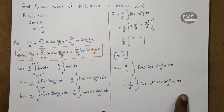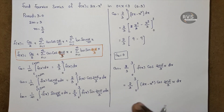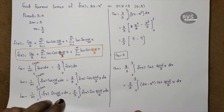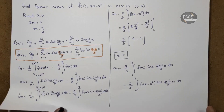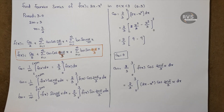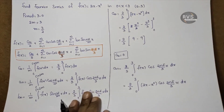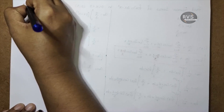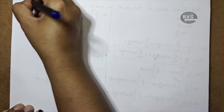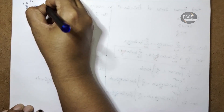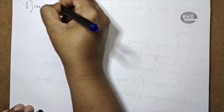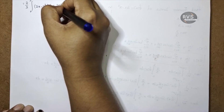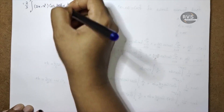Now I am going to integrate this using Bernoulli's formula. I will apply the limits at each level of integration. The integrand is (2x minus x squared) into cos 2n pi by 3x, and we will work through the steps systematically.